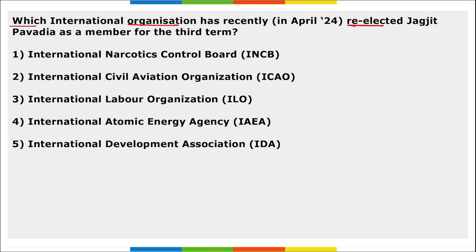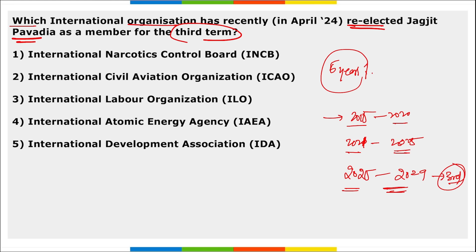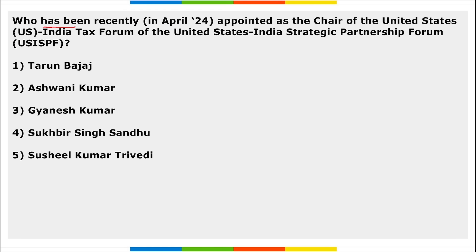Revision section: Which international organization reelected Jagjit Pavadia as a member for a third term, with each term being five years? Her terms were 2015–2020, 2020–2025, and now 2025–2029. She is a member of the International Narcotics Control Board (INCB). India's Jagjit Pavadia has been reelected, with her third term running from 2025 to 2029.